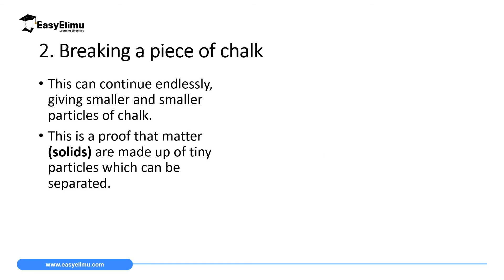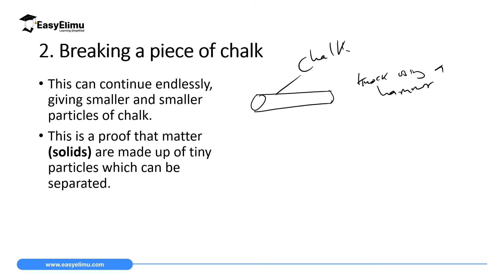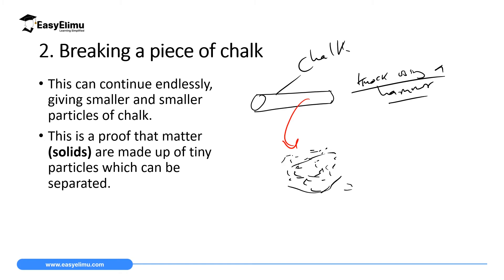Another experiment to prove that solids exist in small particles: take a piece of chalk and knock it with a hammer or grind it with your hand. What you will realize is that this chalk will form chalk dust — very small particles, which we call chalk dust. This means the particles which were making the chalk when it was in its solid state are very small in size, comparable to dust. So that proves that matter is made up of very small particles.